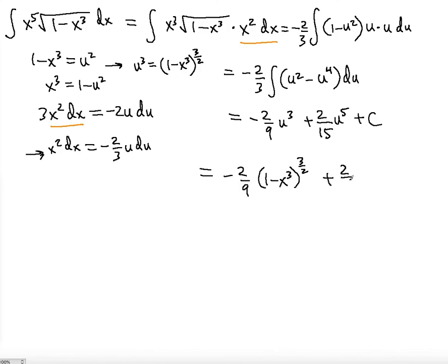So plus 2 fifteenths, 1 minus x to the third to the power of, now this is going to be u to the fifth. So same thing, the top number here will change. So it's going to be 5 over 2. Notice that you can, if you want for convenience, you can write the positive term first.